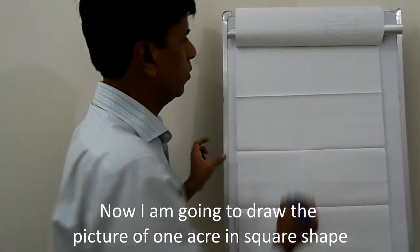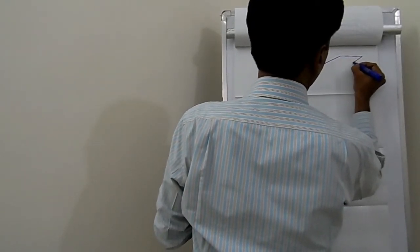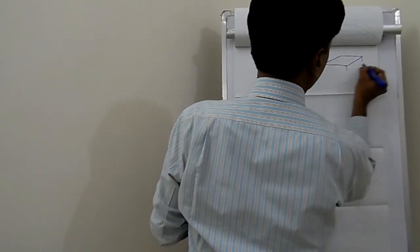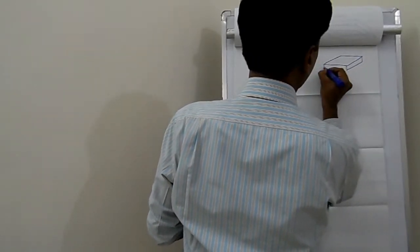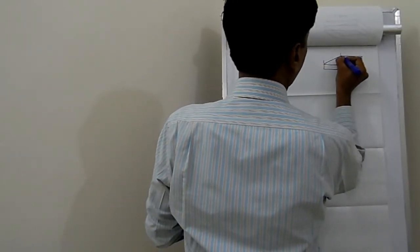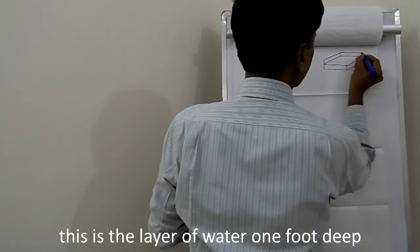Now I am going to draw the picture of one acre in a square shape. For example, this is one acre and this is the layer of water of one foot deep.